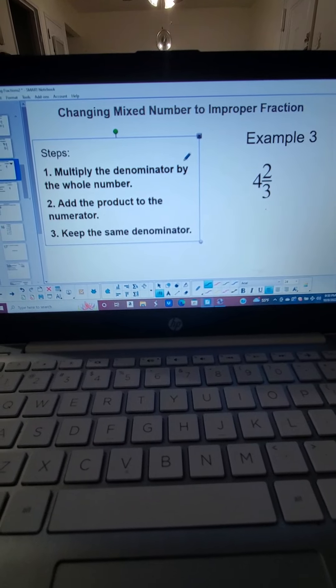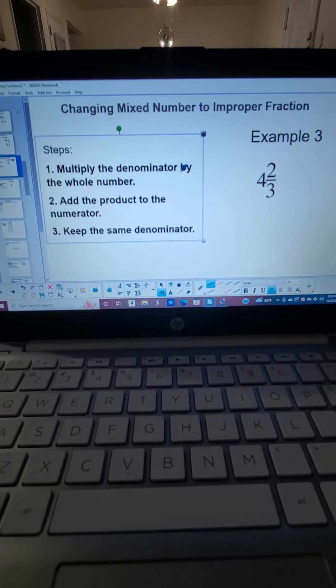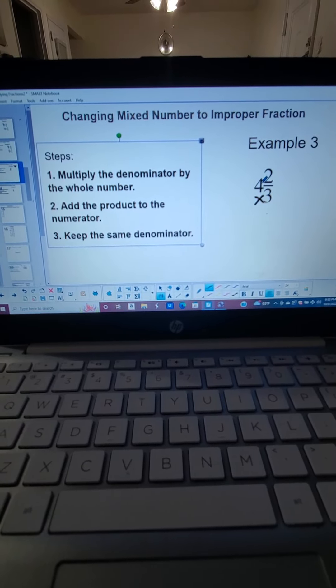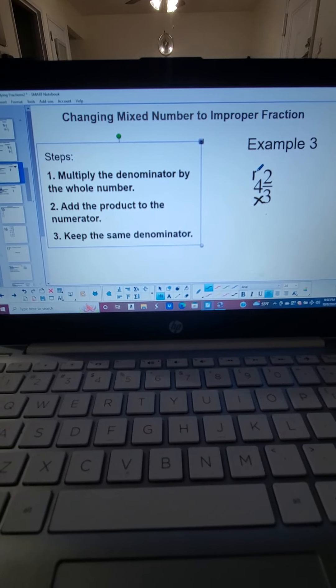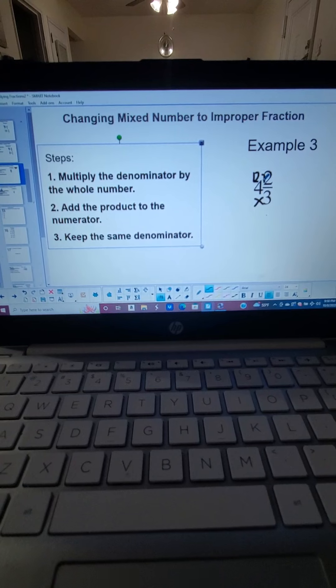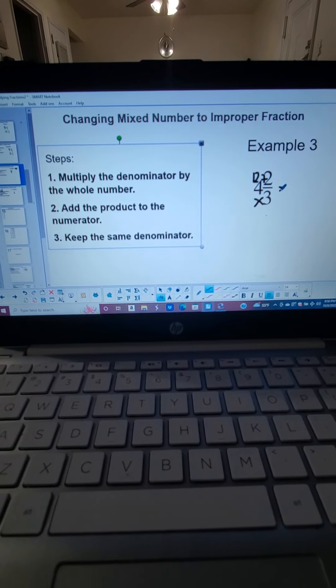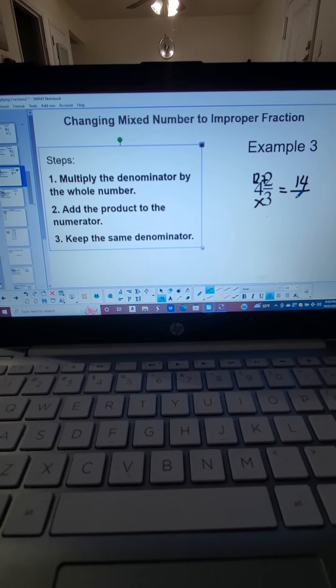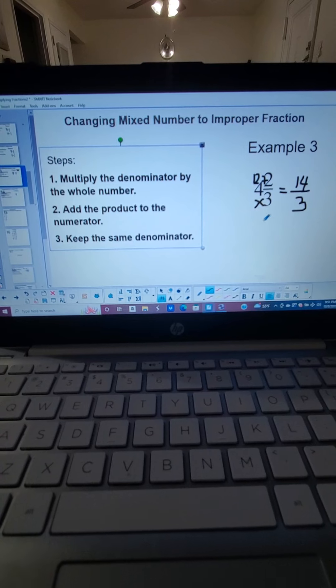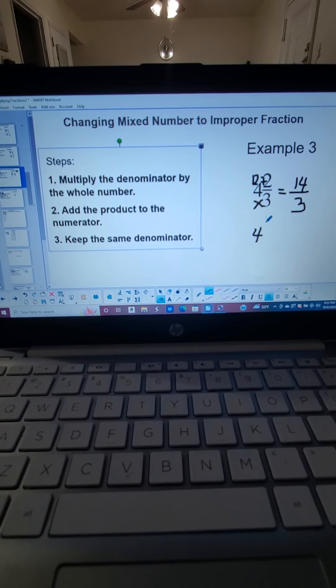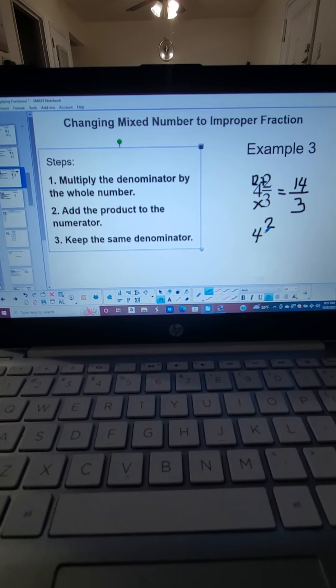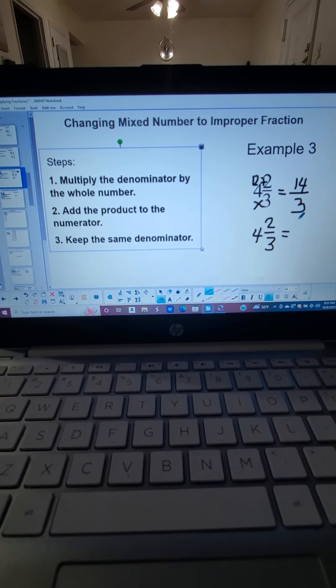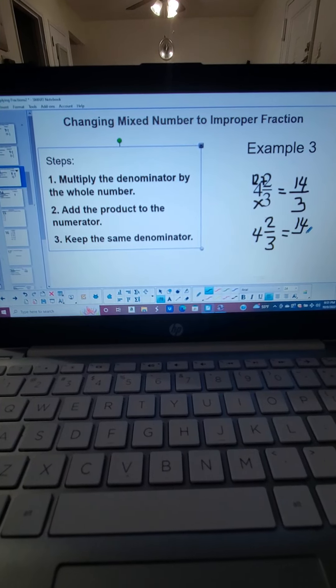Next example, we are going to follow the same step. Multiply the denominator by the whole number. So 3 times 4 is 12. 12 plus 2 is equal to 14. And we keep the same denominator, which is 3. So 4 and 2 thirds is equal to 14 thirds.